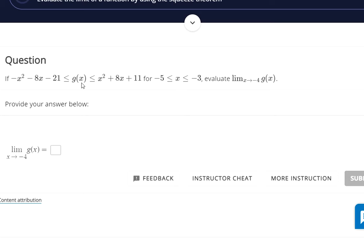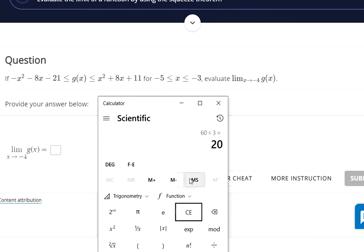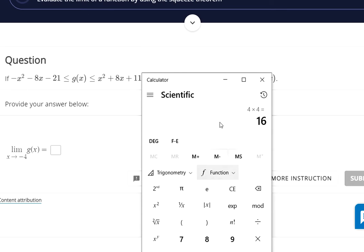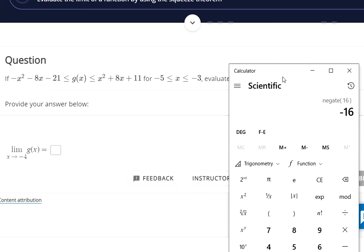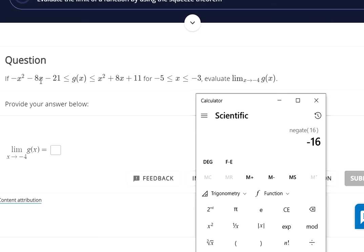In order for the squeeze theorem to apply, the limit for the smaller function and the limit for the greater function have to be the same. So if we plug negative four into this function over here: negative four squared gives us positive sixteen, but that negative is on the outside, so that gives us negative sixteen. Then, we're doing the limit as x approaches negative four, so negative four times negative eight makes positive thirty-two. Negative sixteen plus thirty-two makes sixteen, and sixteen minus twenty-one gives us negative five on the left side.